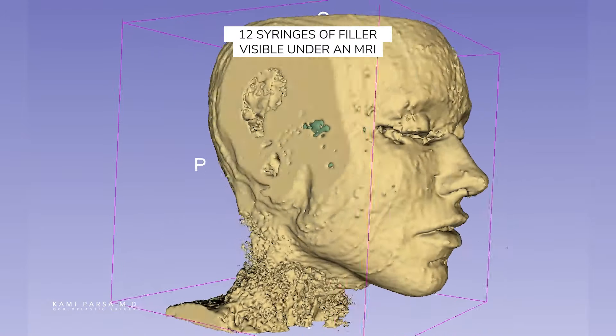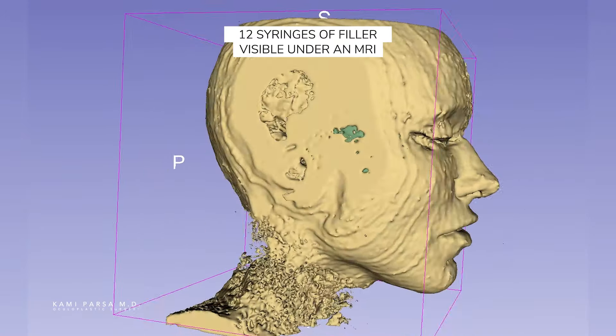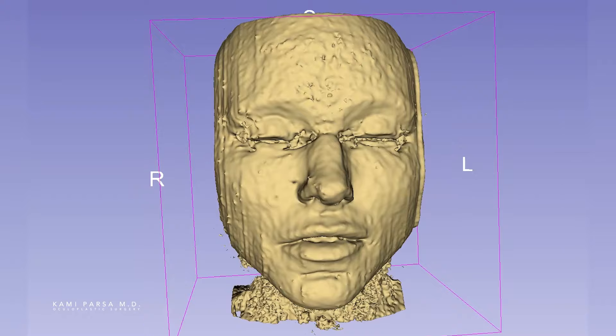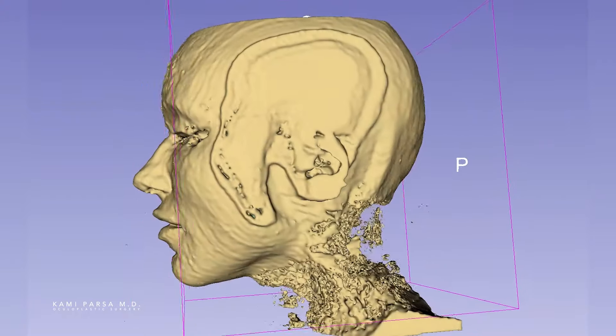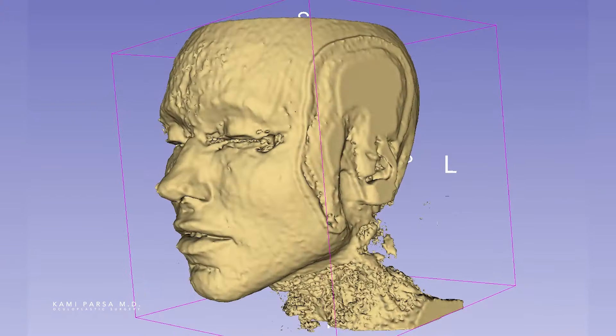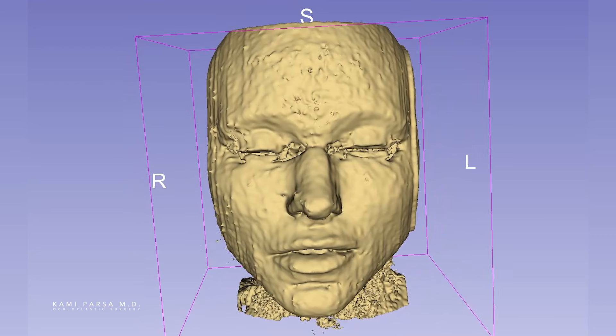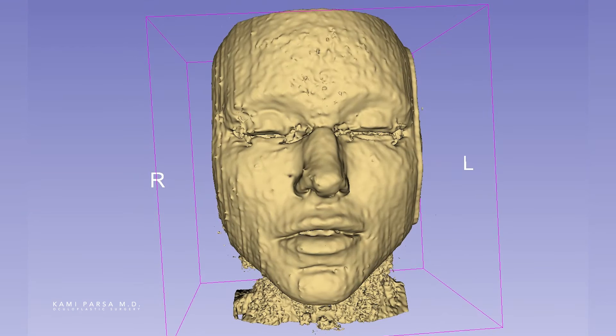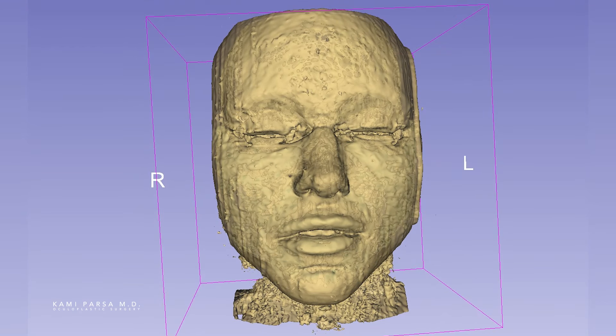So what you're looking at here is an MRI image of a 33-year-old patient who had over 12 cc, which is 12 syringes of hyaluronic acid filler injected to her face over the past six years.